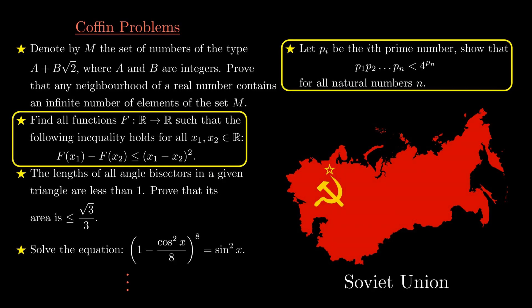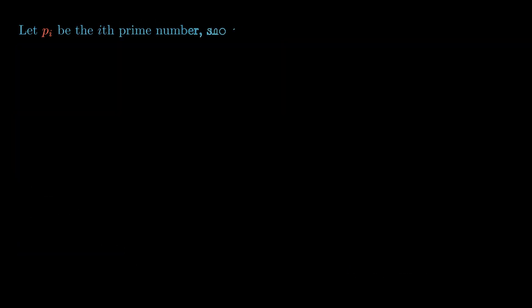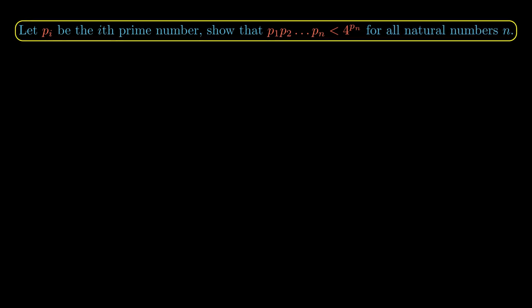The first problem starts by letting p_i be the i-th prime number. We then take the product of the first n prime numbers, which are p_1, p_2, up to p_n, and we want to show that it is less than 4 to the power of p_n for all natural numbers n.